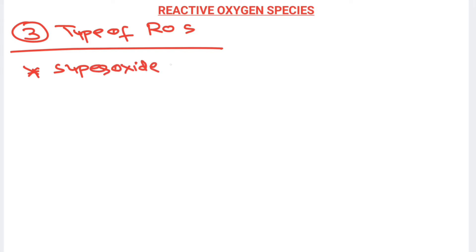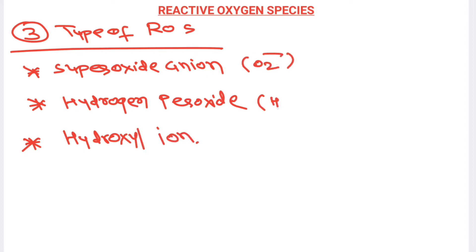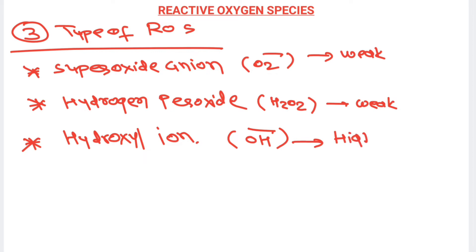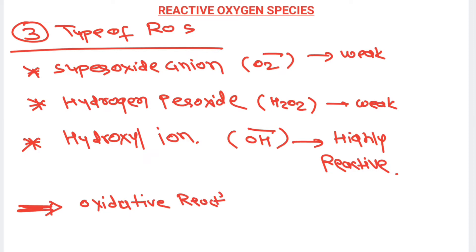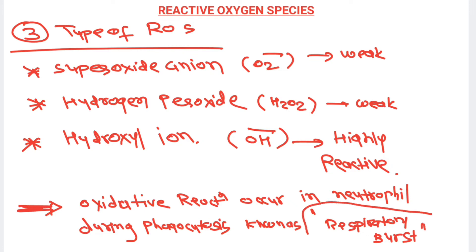There are three types of reactive oxygen species: superoxide anion, hydrogen peroxide, and hydroxyl radical. Superoxide anion and hydrogen peroxide are relatively weak, while the hydroxyl radical (OH·) is highly reactive and can kill bacteria or viruses effectively. All these oxidative reactions occurring in the neutrophil during phagocytosis are known as the respiratory burst, which is responsible for killing of microbes.